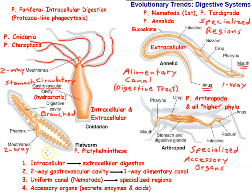True animals like sponges are almost just a little more than a colony and still use intracellular digestion. Their cells are still taking in food particles and digesting those food particles inside the cells — a protozoan-like way of eating.